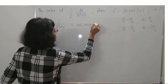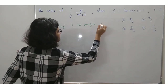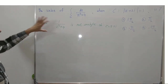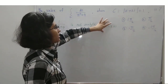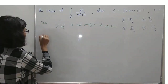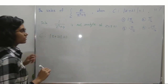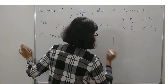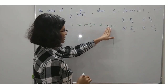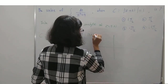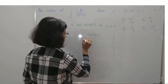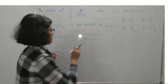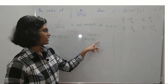We now identify which singular points lie inside C. The curve C is |z + 2i| = 1, which can be written as |z - (-2i)| = 1 — a circle with center -2i and radius 1. Drawing this: the center is at -2i on the imaginary axis, with radius 1.